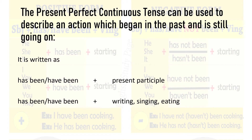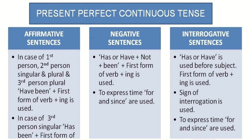So it becomes writing, singing, eating, and so on. The present perfect continuous tense can be used to make affirmative, negative, as well as interrogative sentences.